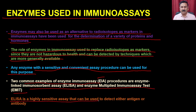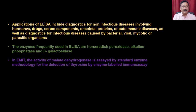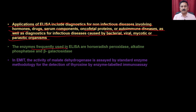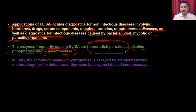ELISA is a very highly specific technique which can be used to detect either antigen or antibodies. Applications of ELISA include diagnostics for non-infectious diseases involving hormones, drugs, serum components, oncofetal proteins, autoimmune diseases, as well as diagnostics for infectious diseases caused by bacteria, viruses, mycoplastic and parasitic organisms. The enzymes frequently used in ELISA are horseradish peroxidase, alkaline phosphatase and beta-glycosidase, with alkaline phosphatase being the most popular enzyme used in ELISA.